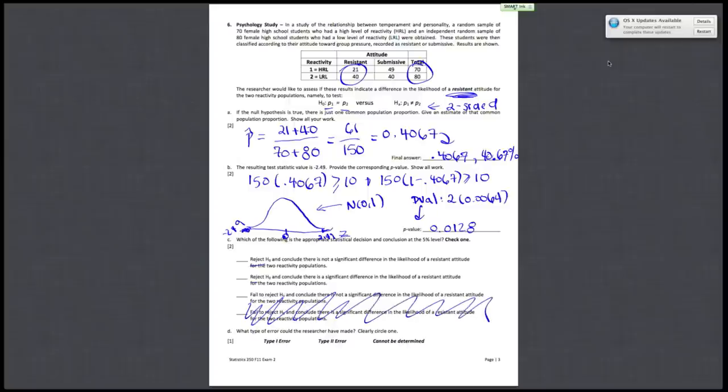And if you're rejecting H-naught, then you're accepting HA, so you conclude that there is a significant difference in the likelihood of a resistant attitude for the two reactivity populations. So the correct answer is the second statement.